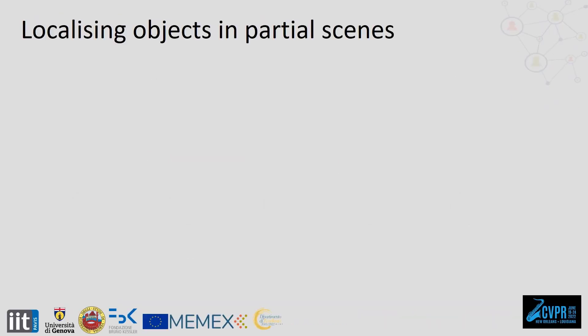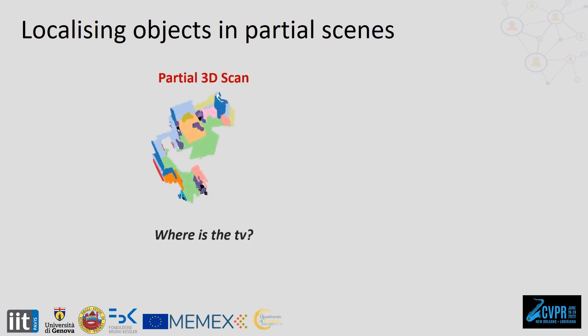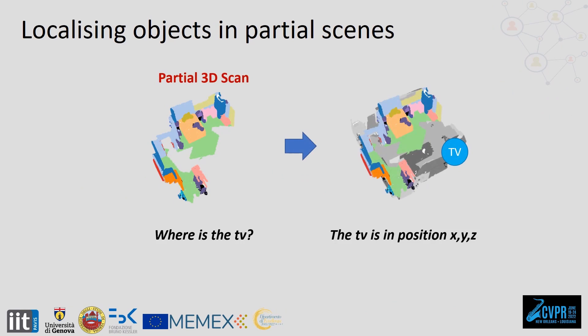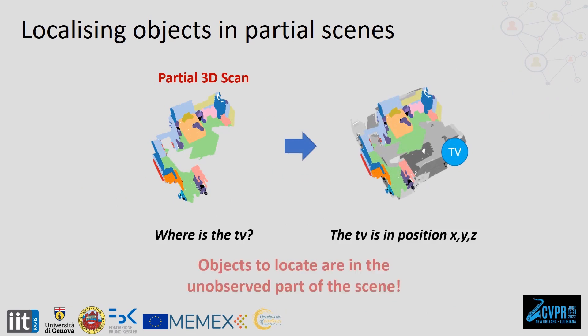In this work, we present the novel problem of locating objects in partial scenes. Given a partial 3D scan of a room and an object to locate, we want to predict its position. The challenge of this task is that the objects to locate are in the unobserved part of the scene.